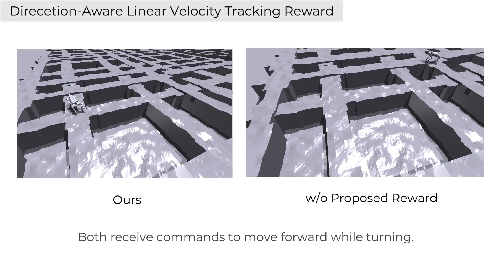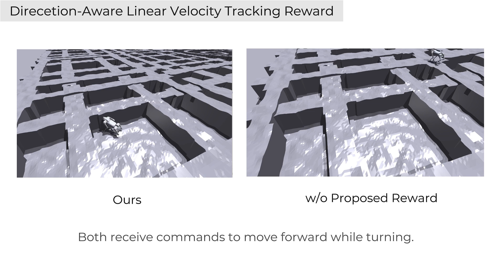During skill training, we introduce a direction-aware linear velocity tracking reward, which effectively reduces unintended behaviors in some cases and greatly improves the robot's maneuverability.